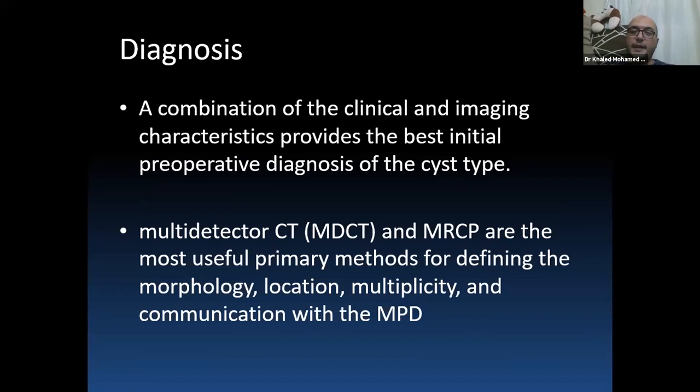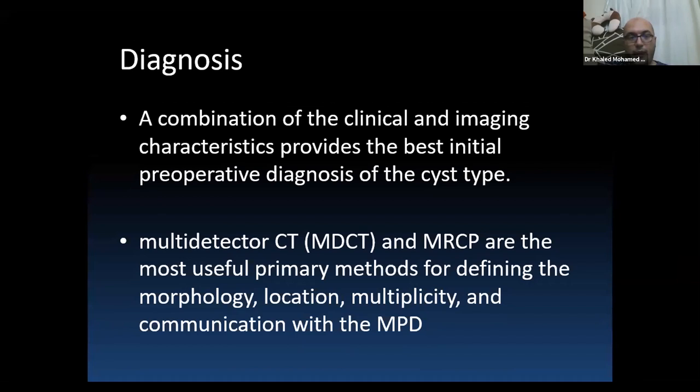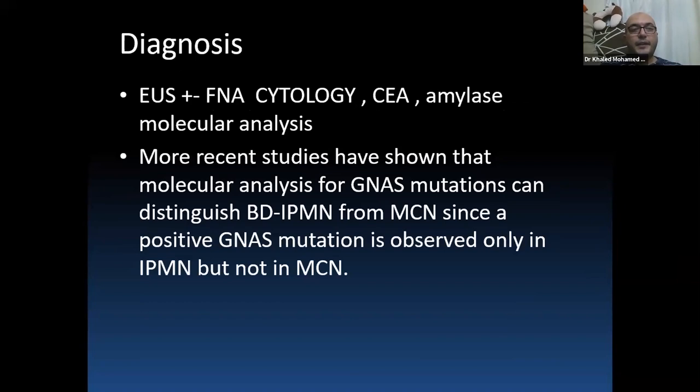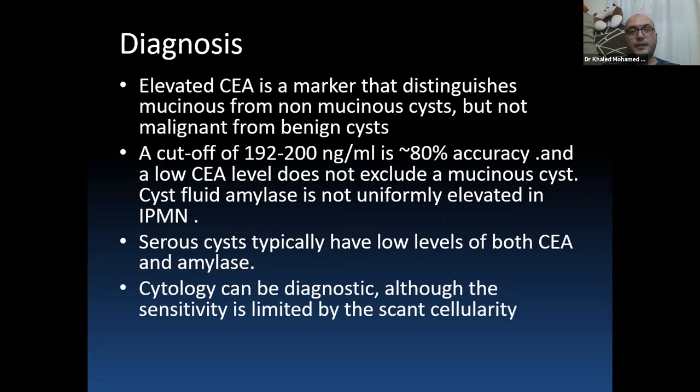CT and MRCP are the most useful primary methods for defining morphology, location, multiplicity, and communication with pancreatic ducts. EOS FNA combined with cytology, CEA, amylase, and molecular analysis is now recommended. Recent studies show that molecular analysis for GNAS mutation can distinguish branch duct IPMN from mucinous cystic neoplasm, since positive GNAS mutation is observed only in IPMN and not in mucinous cystic neoplasm.